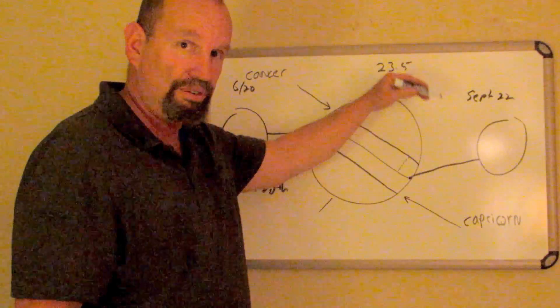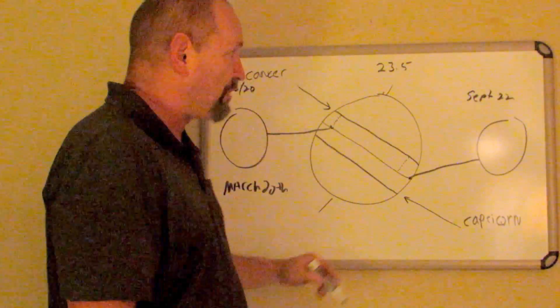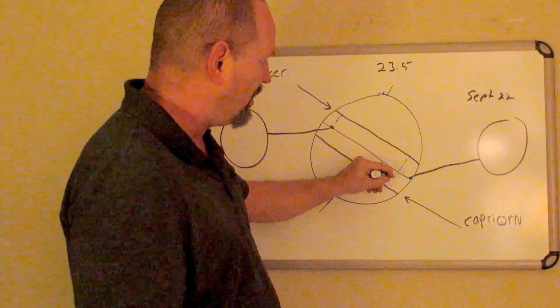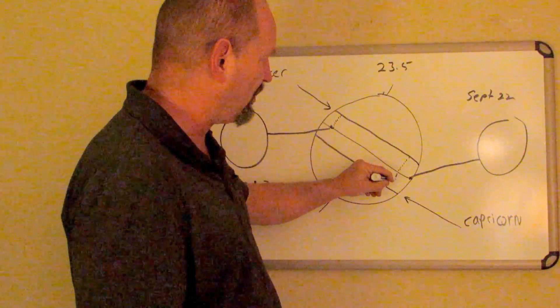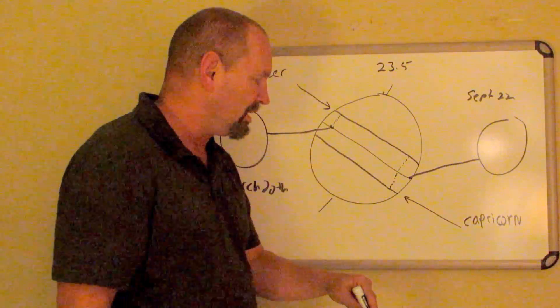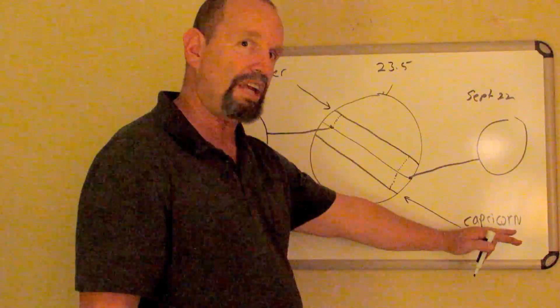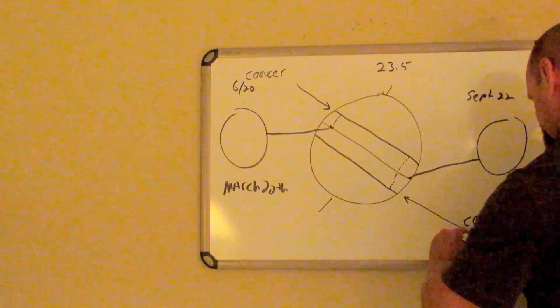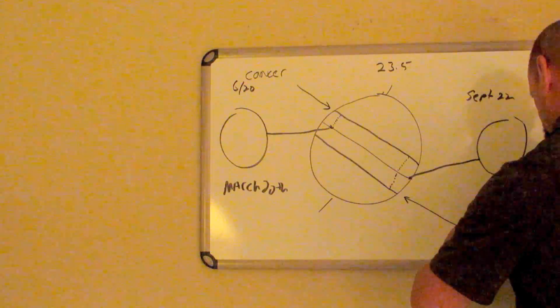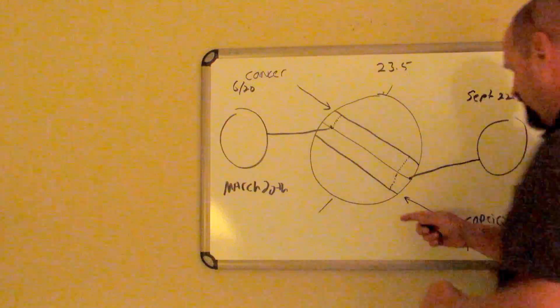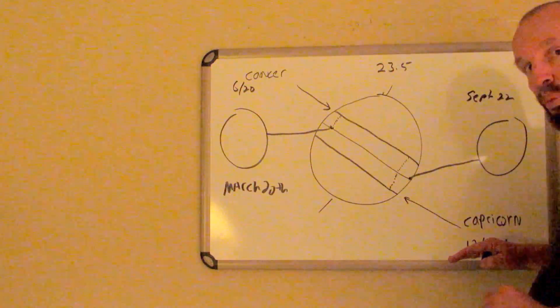It varies a day or two sometimes. From September 22nd forward, the sun shines further and further south until it reaches what we call the Tropic of Capricorn on December 20th, sometimes on the 21st. This is what we call the winter solstice.